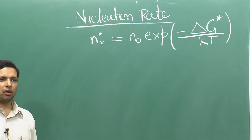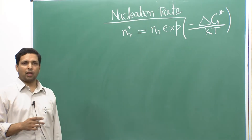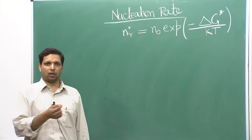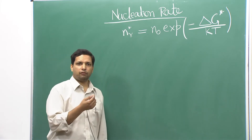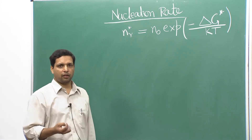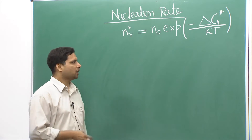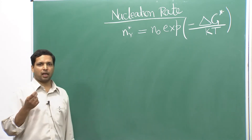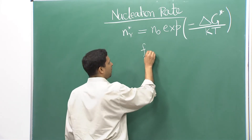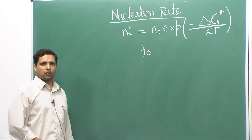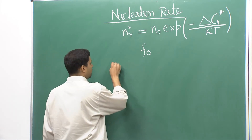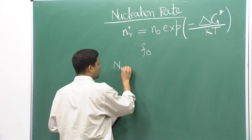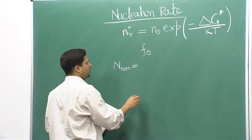This is the total number of clusters of critical size. If we add just one more atom to this, it will become solid because the free energy change becomes negative, meaning the free energy will reduce. Hence, we have to look at the frequency at which this can happen. Let that frequency be f₀. Then the nucleation rate for homogeneous nucleation N_hom is...